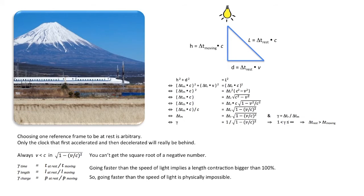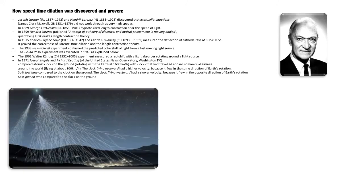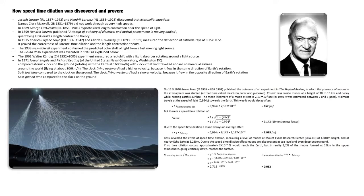Going faster than the speed of light implies a length contraction bigger than 100 percent, so going faster than the speed of light is physically impossible — that's only something for science fiction. The fact that time dilation was discovered and proven a long time ago. Bruno Rossi was the first to really confirm the correctness of the formula. He measured the presence of muons in the atmosphere: cosmic rays create muons and they decay very quickly.